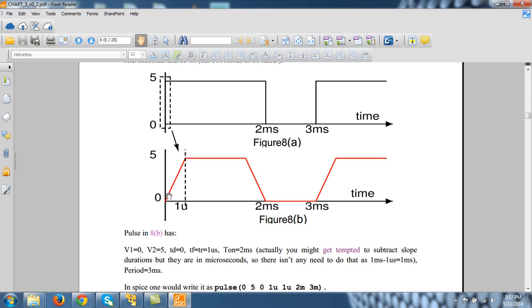I will introduce a small slope here. I am giving a slope of 1 microsecond. That means from this point to this point, the horizontal difference is 1 microsecond, because 1 microsecond is very small as compared to millisecond.